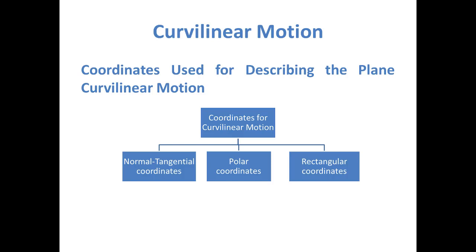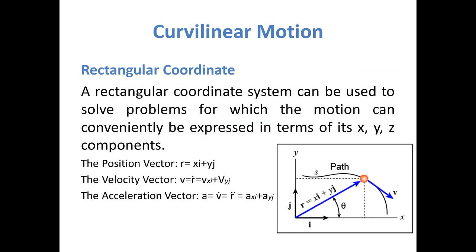The coordinates used for describing the plane curvilinear motion are: normal-tangential coordinates, polar coordinates, and rectangular coordinates. A rectangular coordinate system can be used to solve problems for which the motion can conveniently be expressed in terms of its x, y, and z components. The three main vectors important here are the position vector, the velocity vector, and the acceleration vector.